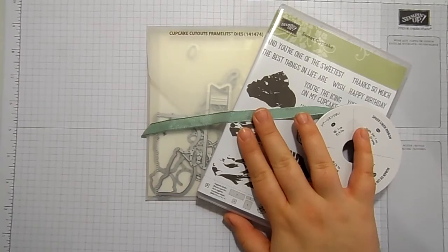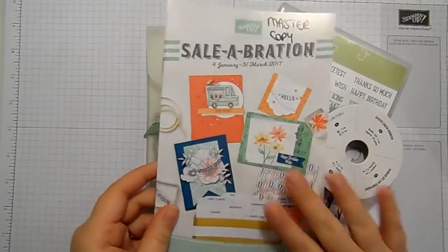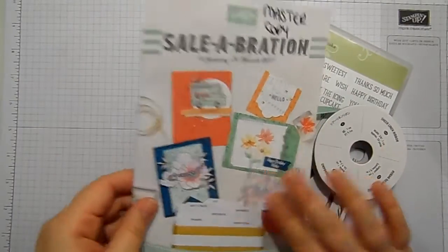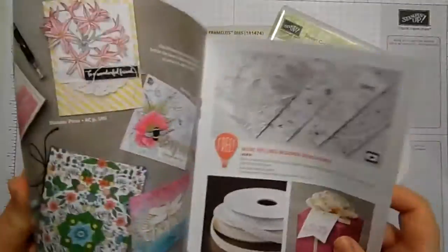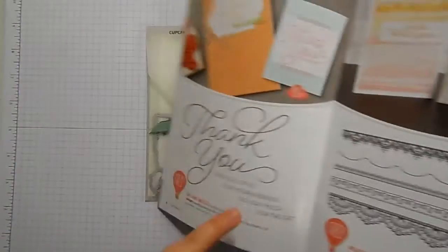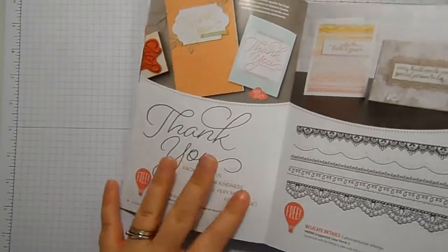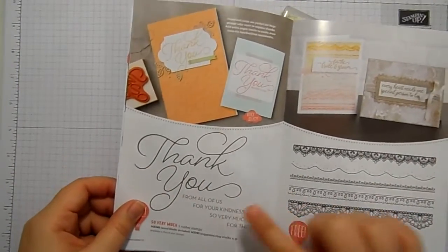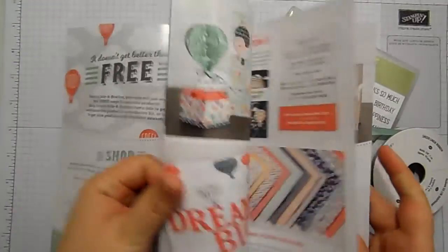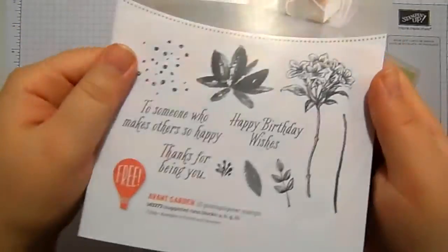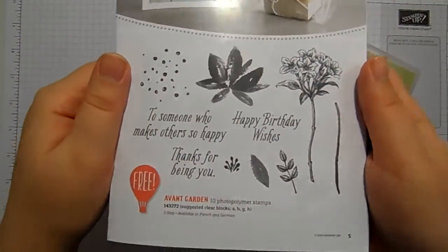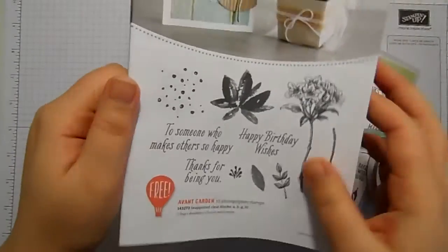Because this class costs a smidge over £45, you get to choose something out of the Celebration catalogue as well to take home with you. I am absolutely in love with this stamp set. I cannot get enough of this and I think this will be gorgeous paired with those cupcakes. There's loads of stuff in here that you can choose for free. It's just so pretty.